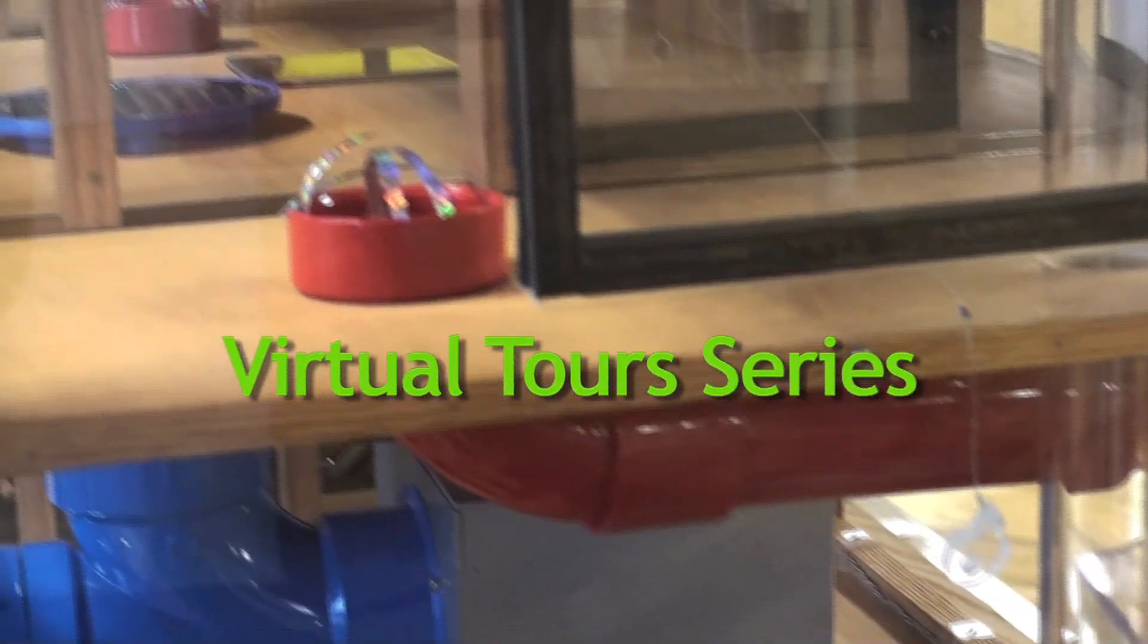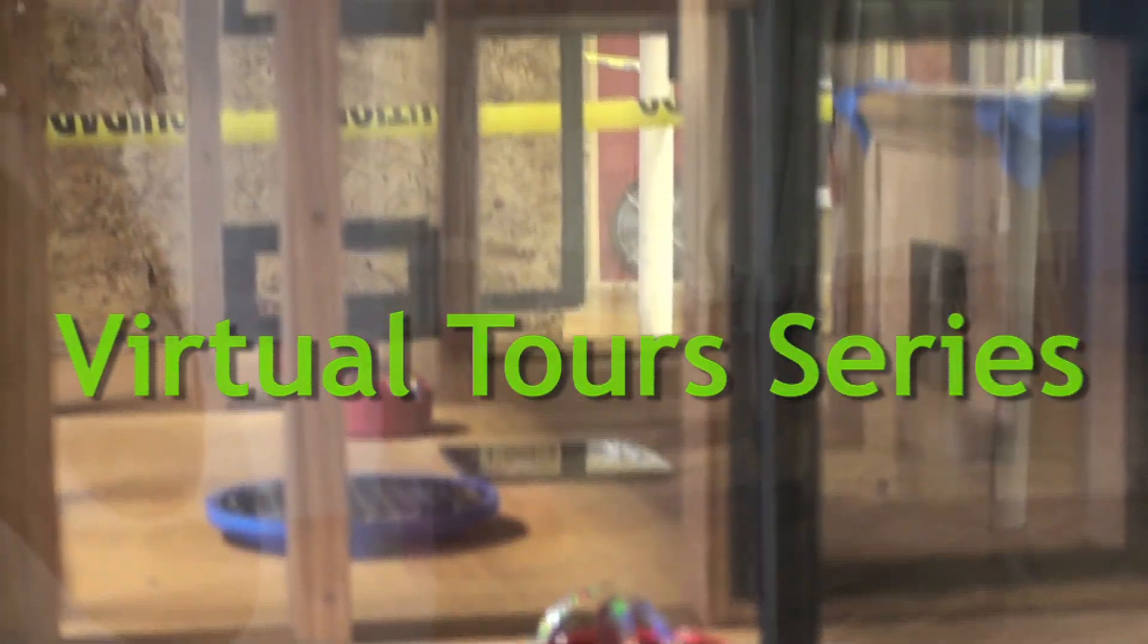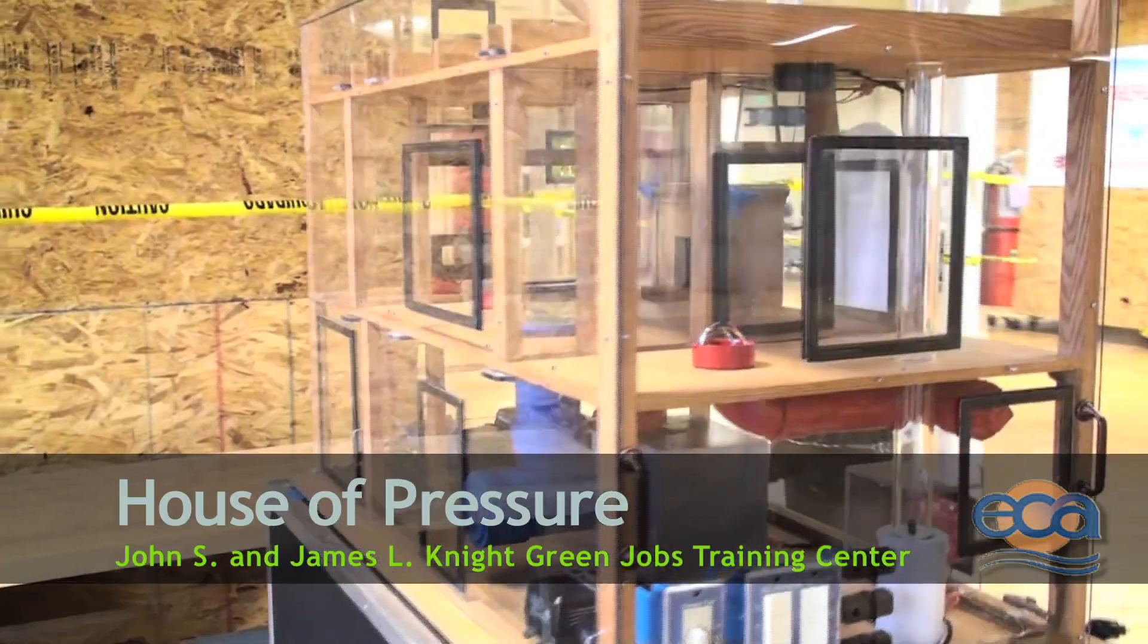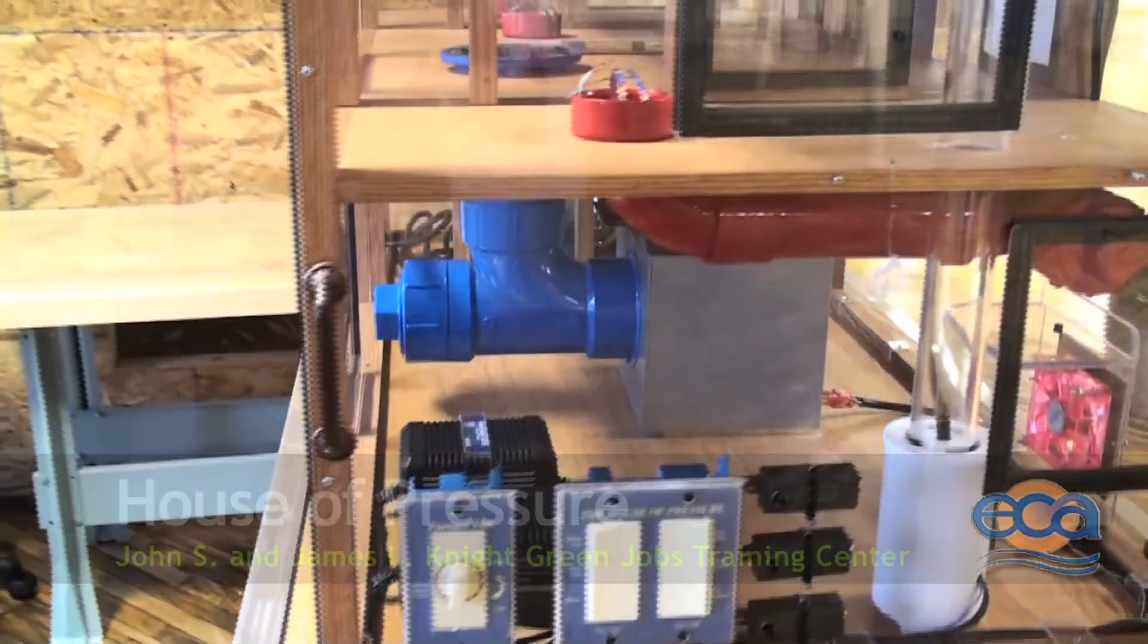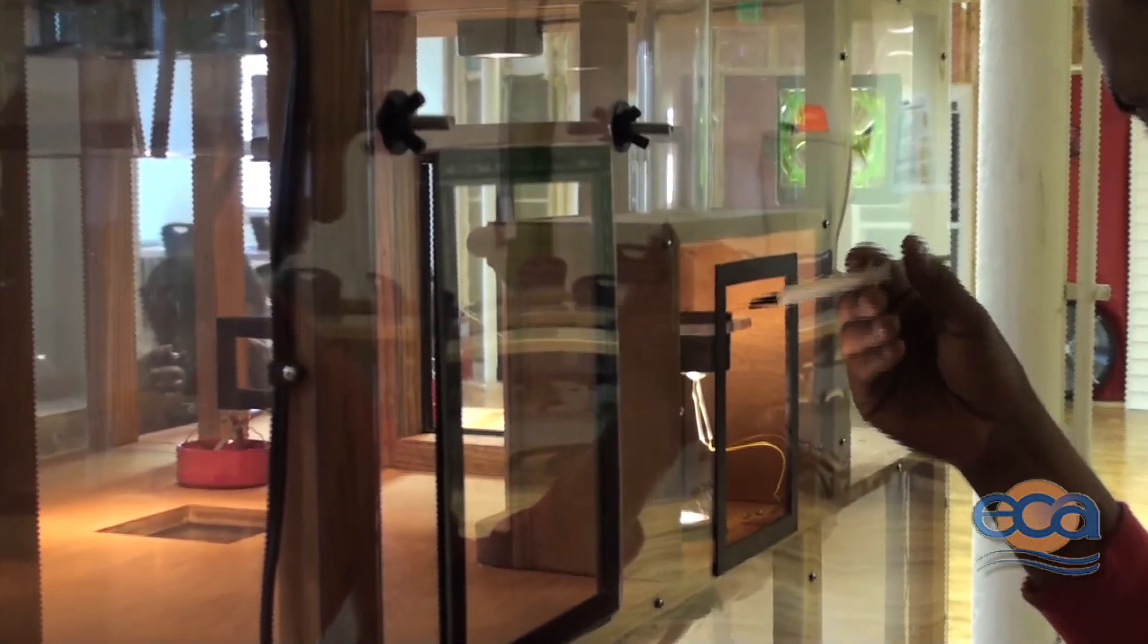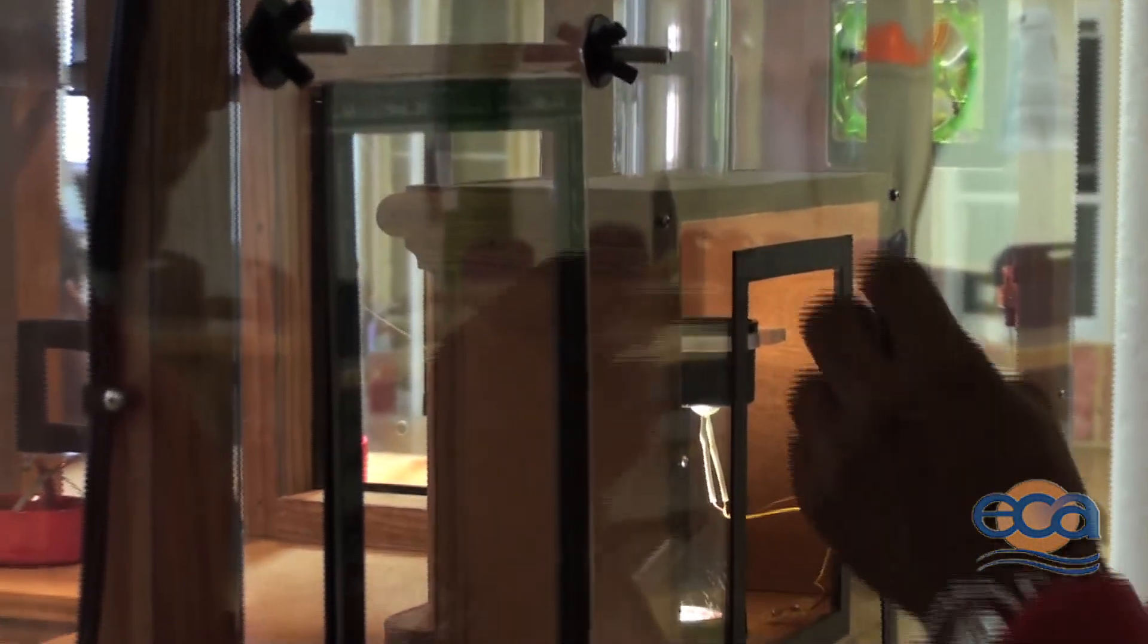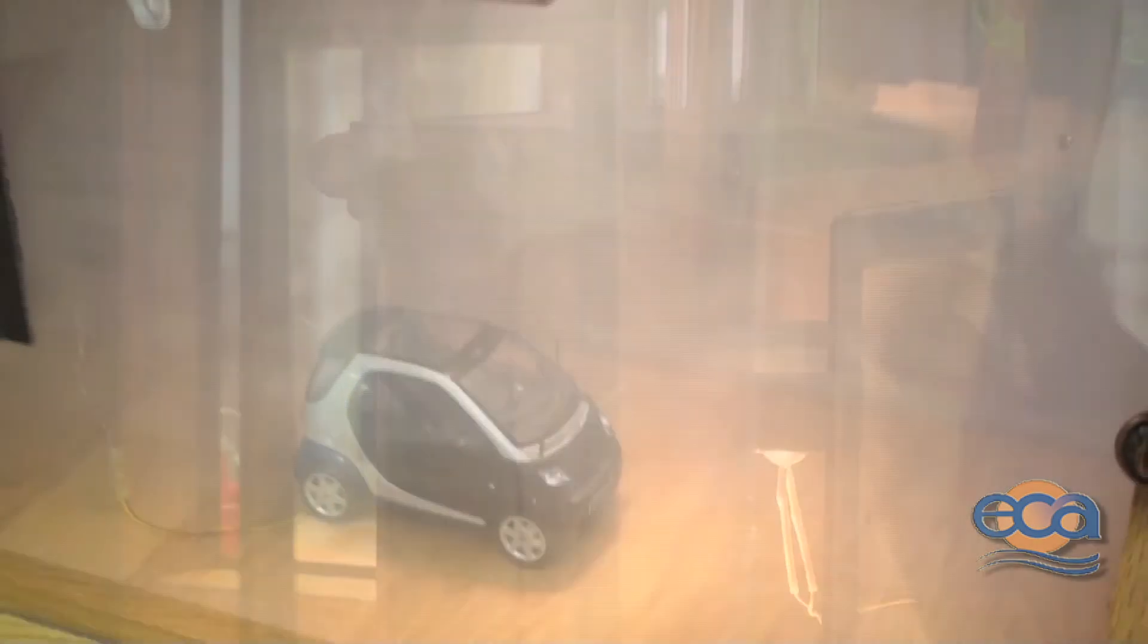This is the plexiglass house that we briefly saw earlier. Basically, it is a small model of a house including appliances. There is a hot water heater, garage, various fans, ductwork, and other things commonly found in a home.